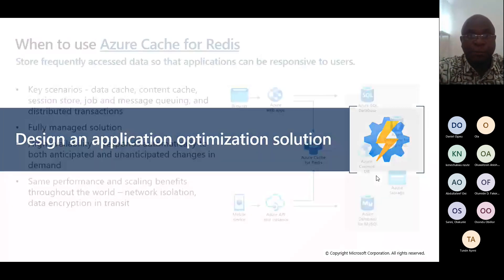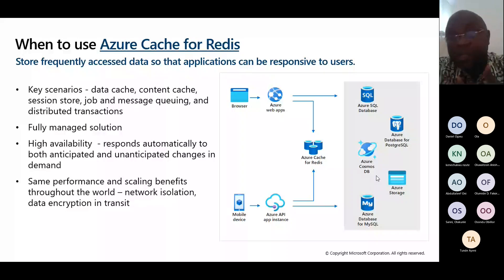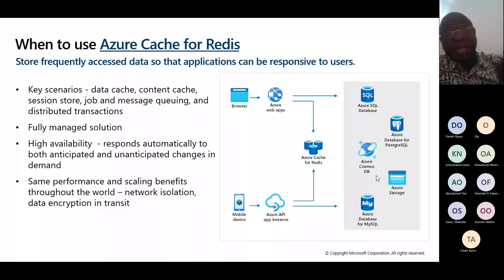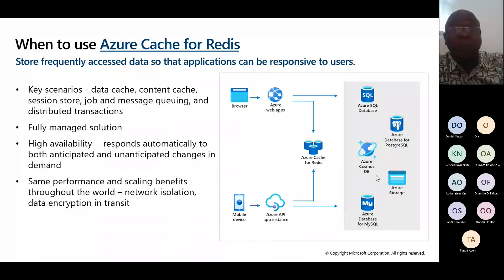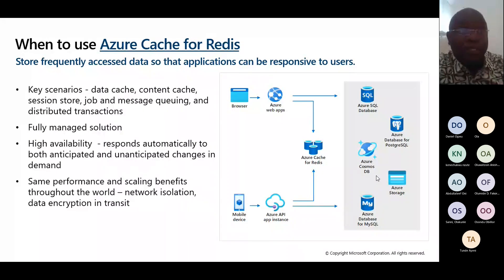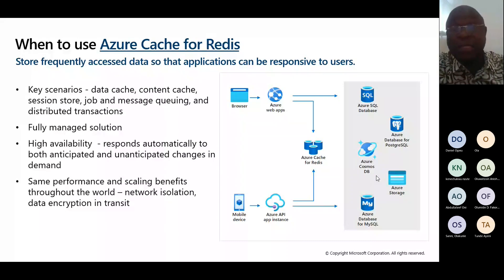Now let's design an application optimization solution. Azure Cache for Redis stores frequently accessed data so that applications can be responsive to users. Sometimes there's particular data you use every time — Redis cache makes it possible so you don't go through the stress of fetching it repeatedly. Key scenarios: it will cache data, cache content, store sessions, job queues, messaging queues, distributed transactions — everything your application is working with. It's a fully managed solution.